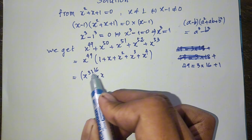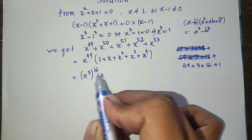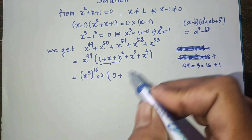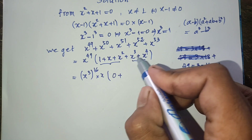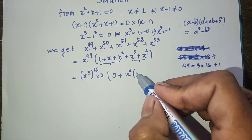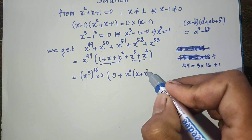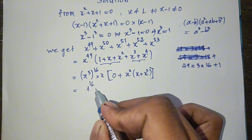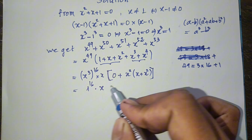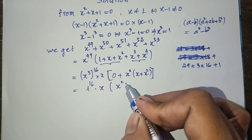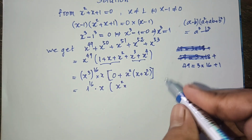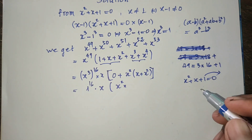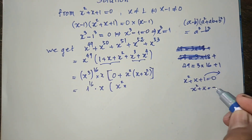Now, 49 equals 3 times 16 plus 1, so h power 49 equals (h cubed) power 16 times h. Since h cubed equals 1, this becomes 1 power 16 times h, which is just h. Also, since h squared plus h plus 1 equals 0, we can rearrange to get h squared plus h equals minus 1.